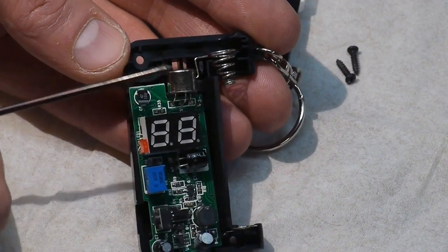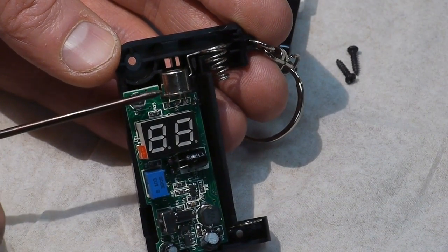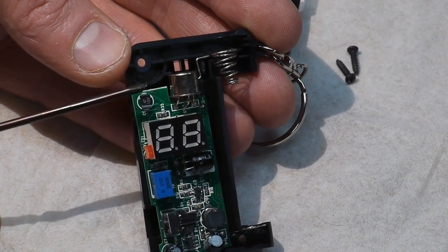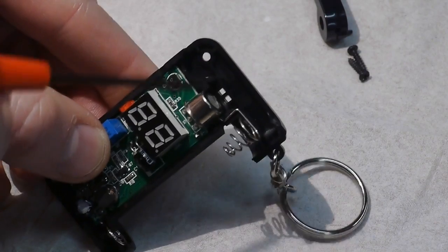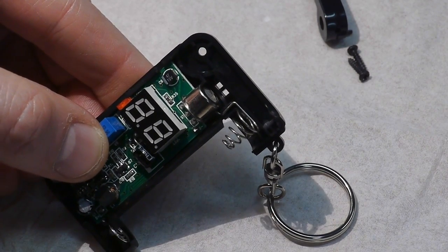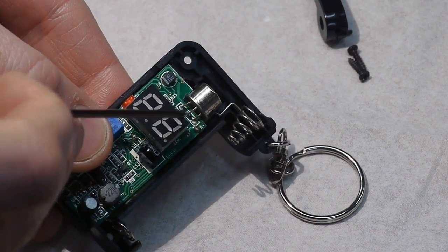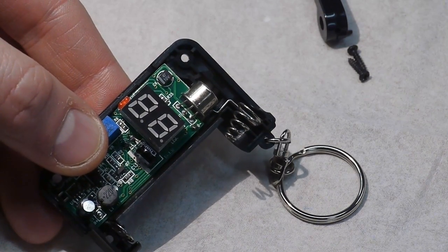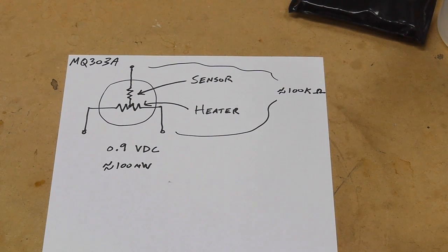I searched around a little bit for alcohol sensors and found that the market is dominated by a specific line of sensors made by the same company. This particular sensor is most likely an MQ303A, and we can see that it's a three terminal device. Two of the terminals are for the heater, and the third terminal is the signal. Basically, it's just a variable resistor that changes resistance based on the concentration of alcohol vapor blowing across it.